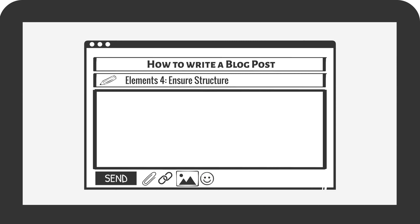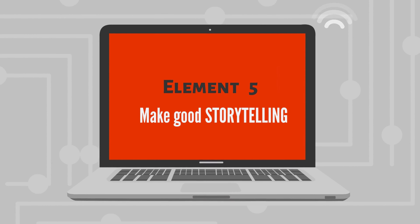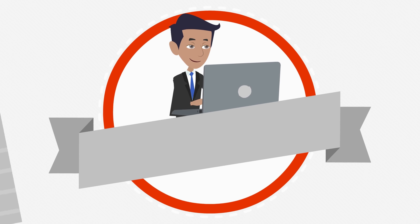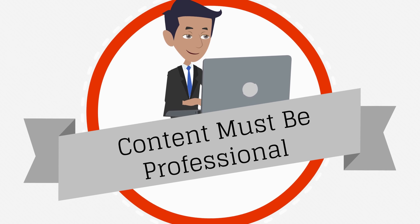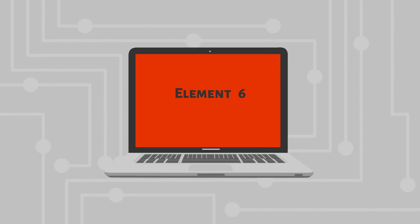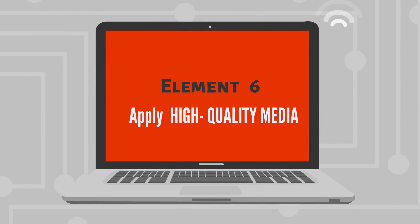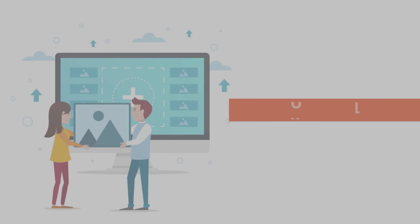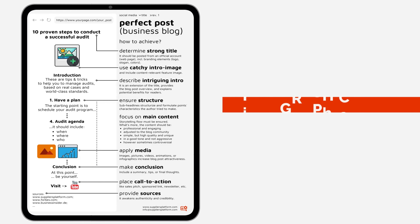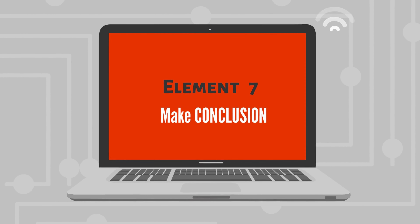Element five: make good storytelling — the main content must be professional, engaging, and adjusted to your community. Element six: apply high quality media like images, pictures, animations, or infographics. Element seven: make a conclusion.